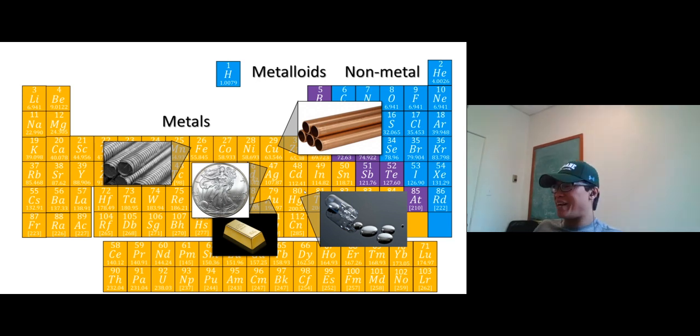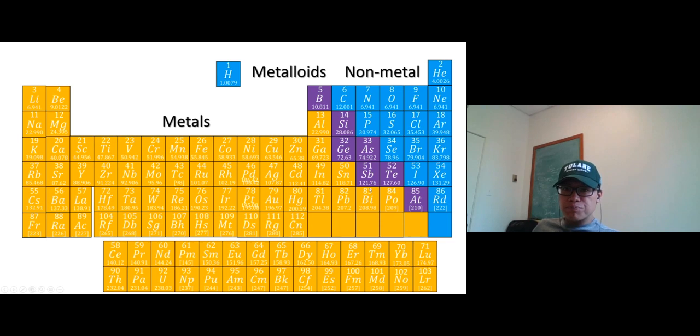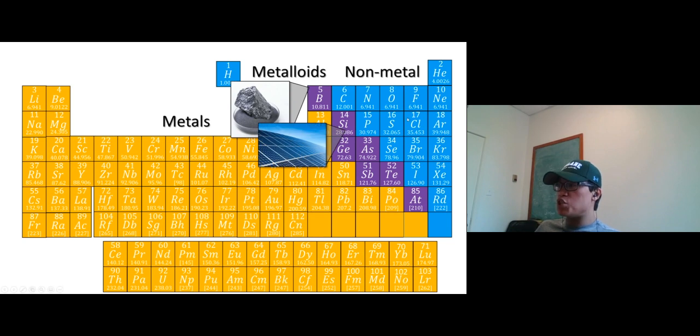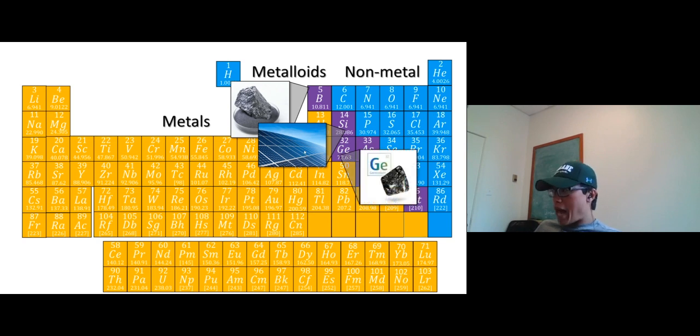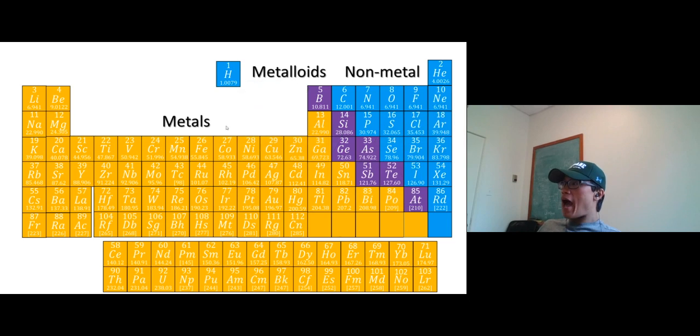Now, next one: metalloids. Metalloids are the purple ones right here. Metalloids are used primarily in electronic devices or semiconductors. We have boron, we have silicon. Silicon is used quite a lot in solar cells and in your electronic devices, your phone, your laptop. We have gallium, we have arsenic. Arsenic is quite toxic. Arsenic is primarily used in an alloy with lead to use in car batteries or in some type of semiconductor.